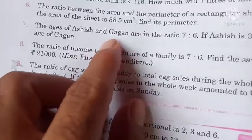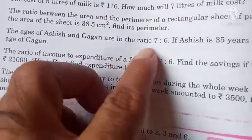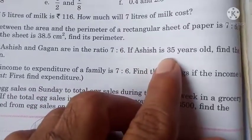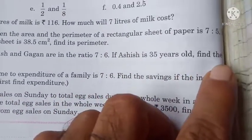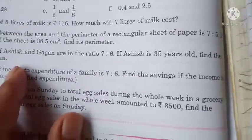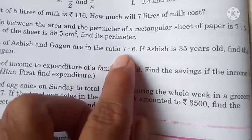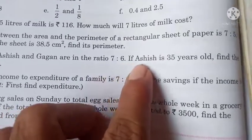The ages of Ashish and Gagan are in the ratio 7:6. If Ashish is 35 years old, find the age of Gagan. So Gagan and Ashish have an age ratio of 7:6.